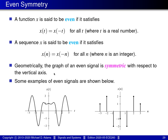In terms of the geometric interpretation of even symmetry, even symmetry implies that the graph of the function is symmetric with respect to the vertical axis. At the bottom of the slide, I have a couple of examples of even signals. In the bottom left, there's an example of a function with even symmetry — the left half of the graph is a mirror image of the right half, where the mirroring takes place through the vertical axis. In the bottom right, there's an example of a sequence which is even, and again the graph is symmetric about the vertical axis.